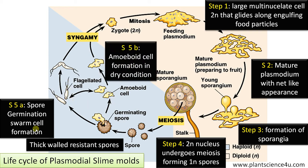Both swarm cells and amoeboid cells behave just like gametes. They fuse in pairs, forming the zygote — the diploid cell again. This diploid zygote undergoes continuous mitosis, forming the multinucleate plasmodium again, thus completing the life cycle.